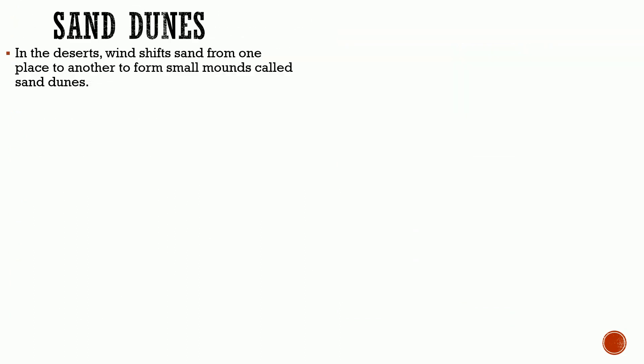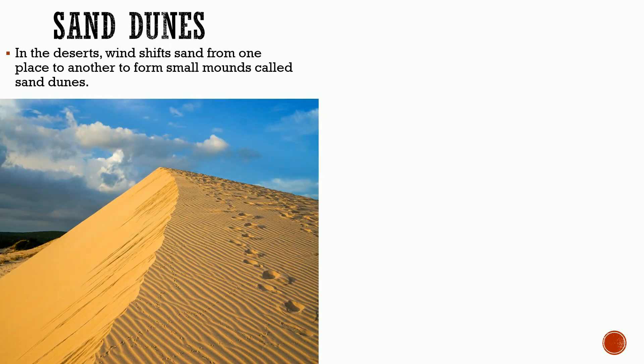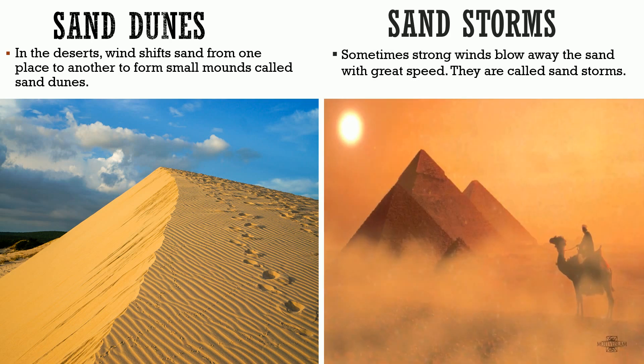Let's learn about sand dunes. In the deserts, winds shift sand from one place to another to form small mounds called sand dunes, as you can see in this picture. Sometimes, strong winds blow away the sand with great speed — these are called sand storms, as you can see in this picture.